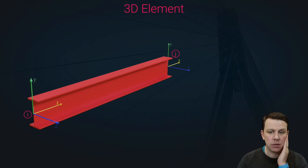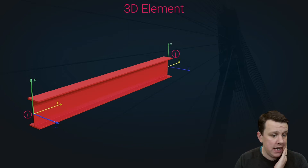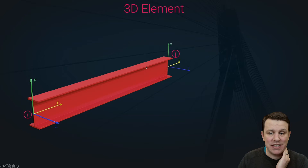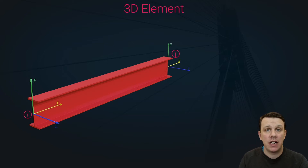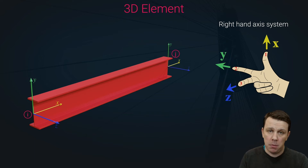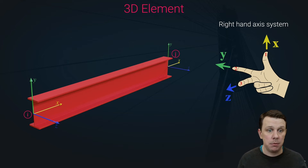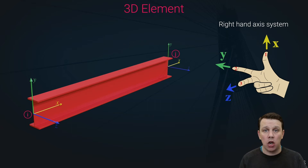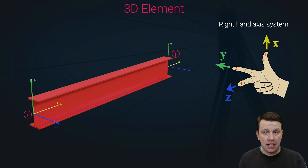Now we move on to the 3D beam element. Again we have node i and node j, and we have an x-y-z axis system at each node. The first thing is to establish our convention for setting up this axis system. We're going to use the right-hand rule. You take your right hand, point your thumb along the direction of the x-axis — for us, the x-axis is always the longitudinal axis of the beam. Your index finger then points in the direction of the y-axis.